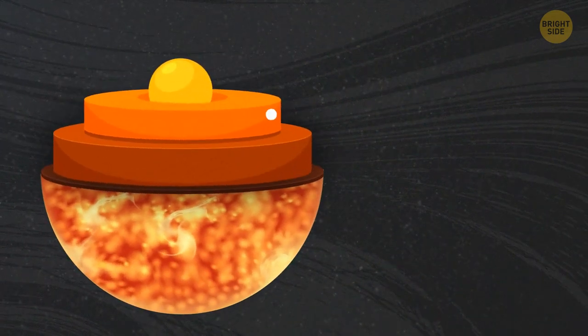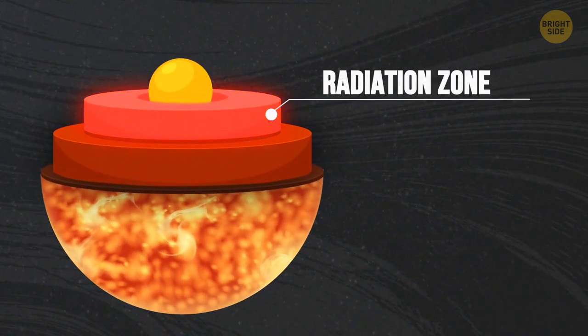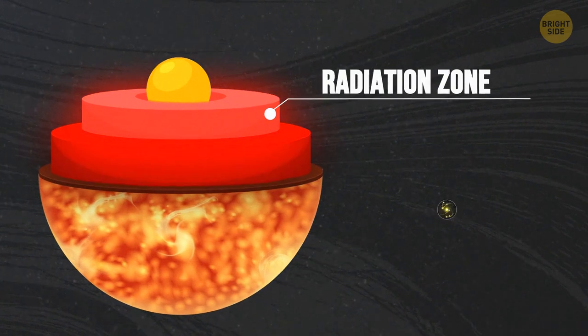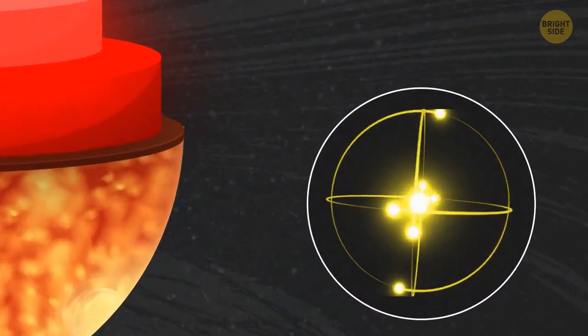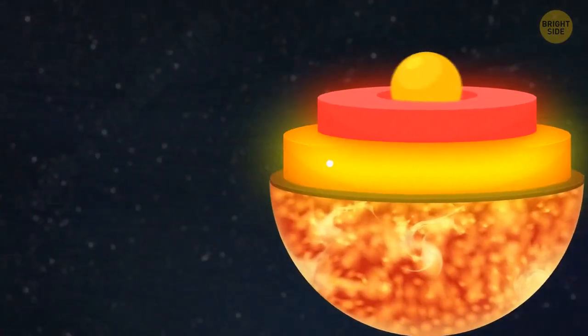The next layer is the radiation zone. This is where the heat is transferred from the core to the next layers. But the photons here don't move in an outward direction. They can be directed anywhere and re-radiated many times. Scientists believe that the average time it takes a photon of light to travel from the core to the next layer of the sun is about 10,000 to 170,000 years.